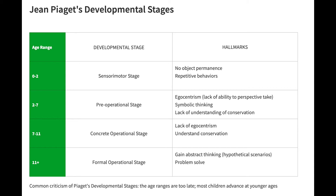The second cognitive limitation is the inability to understand conservation, or more specifically, the conservation of mass. To test whether a child had the ability to understand conservation, Piaget would pour water from a short and wide glass into a tall and skinny glass. Even though a child in the pre-operational stage could see Piaget pour the water, they would still say that there was more water in the second glass because the water level was higher.